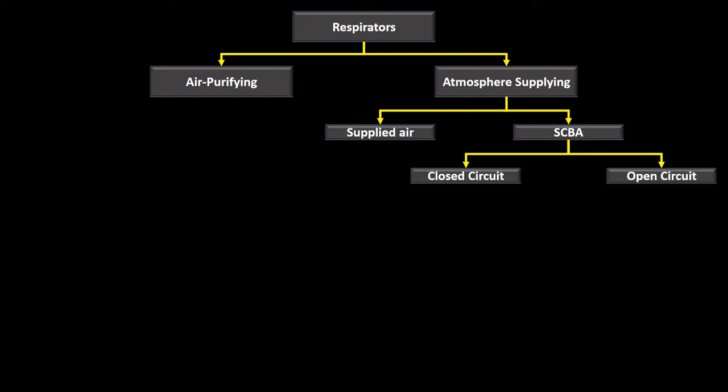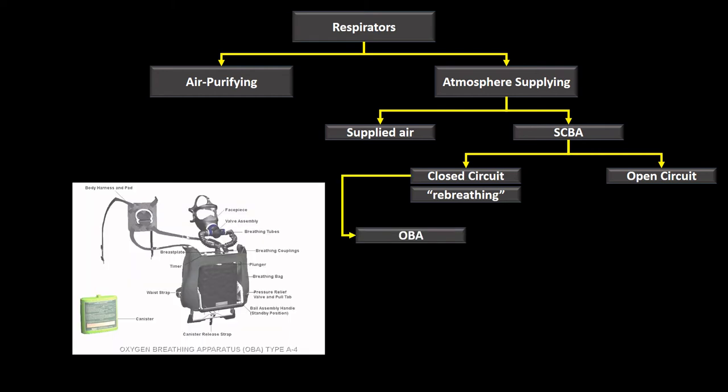A closed circuit SCBA is a rebreathing SCBA, allowing the user to rebreathe some exhaled air, sometimes through a chemical reaction that produces oxygen. An open circuit has a valve to expel exhaled air, so every breath in is fresh air from the cylinder.